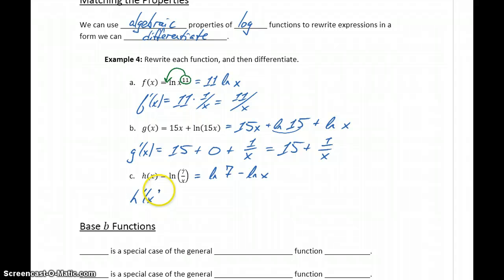Meaning that h prime of x, the derivative of h of x, will be the derivative of natural log of 7, which is again just a constant, so we get 0, minus 1 over x, or negative 1 over x.